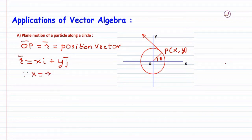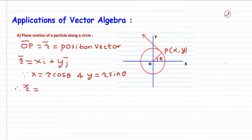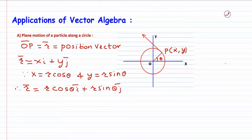The value of x is equal to r cos theta and the value of y is equal to r sin theta. Therefore, substituting these values of x and y, we get r cos theta times i plus r sin theta times j.